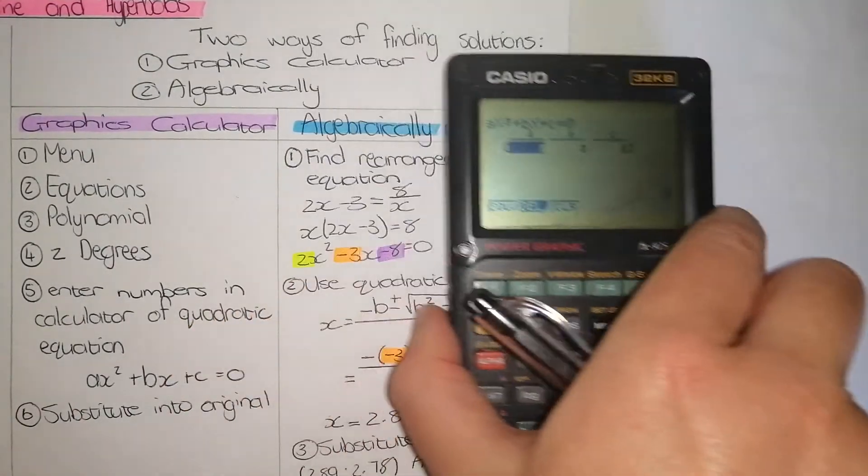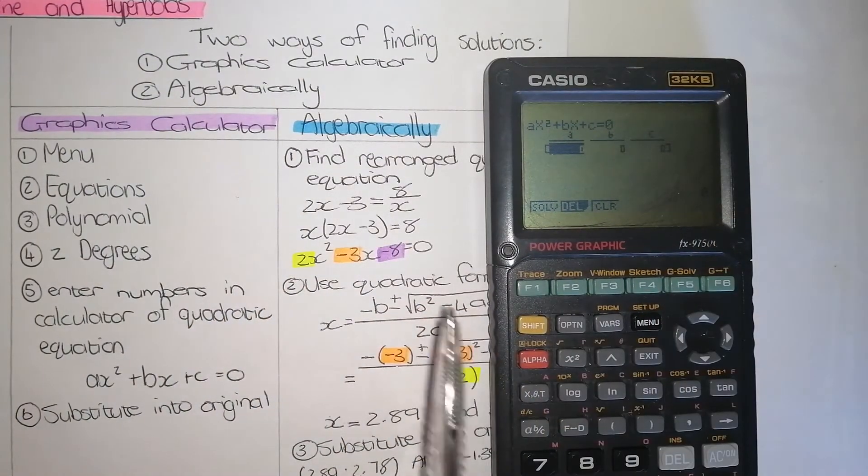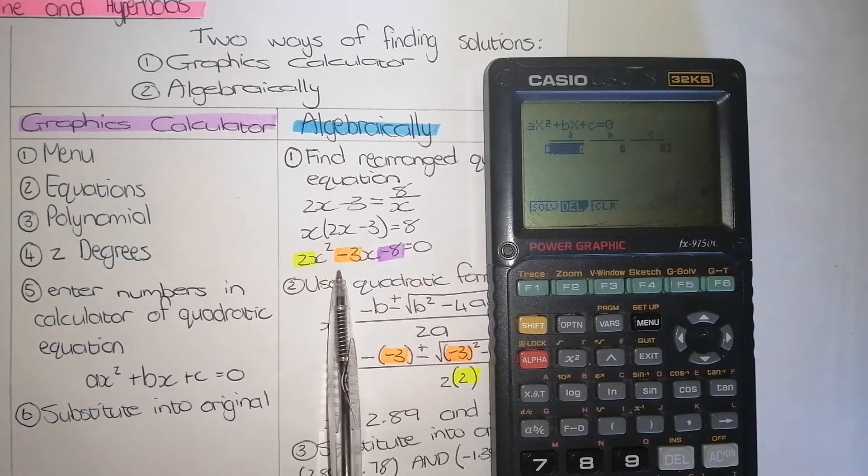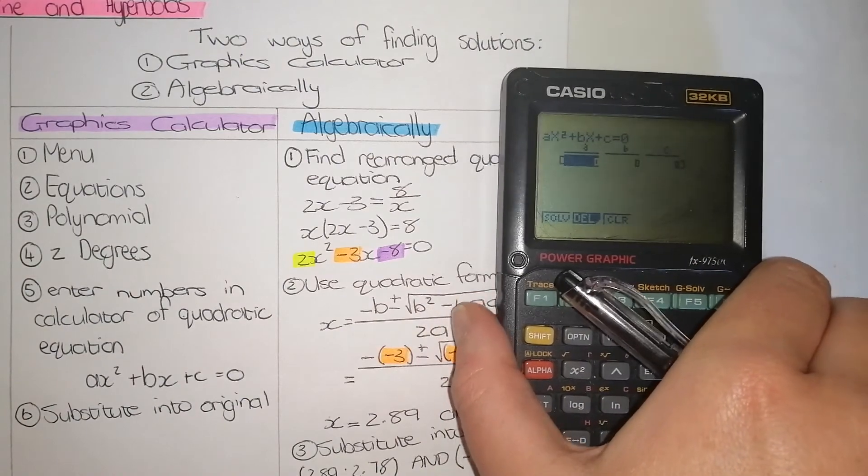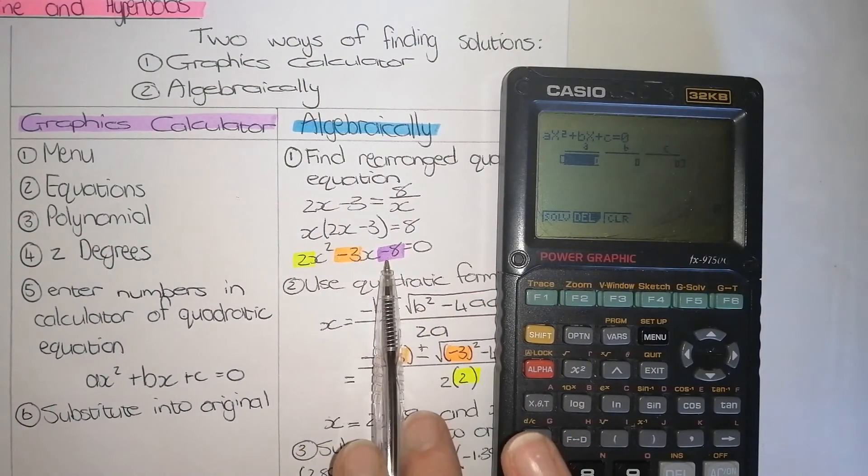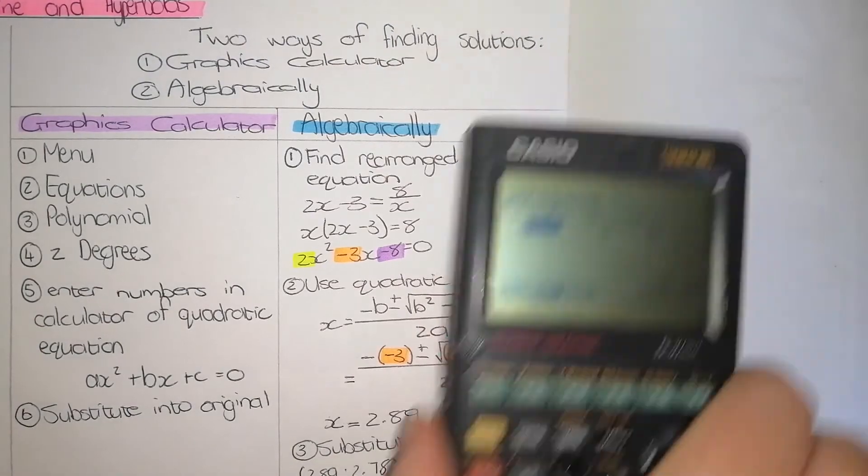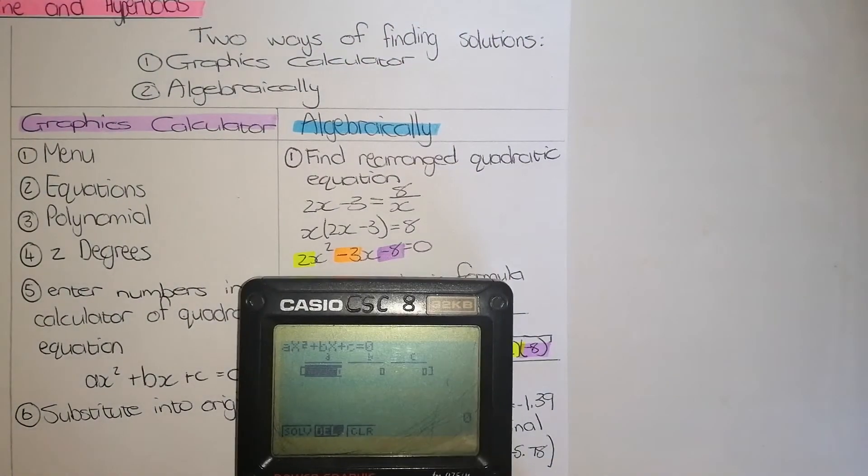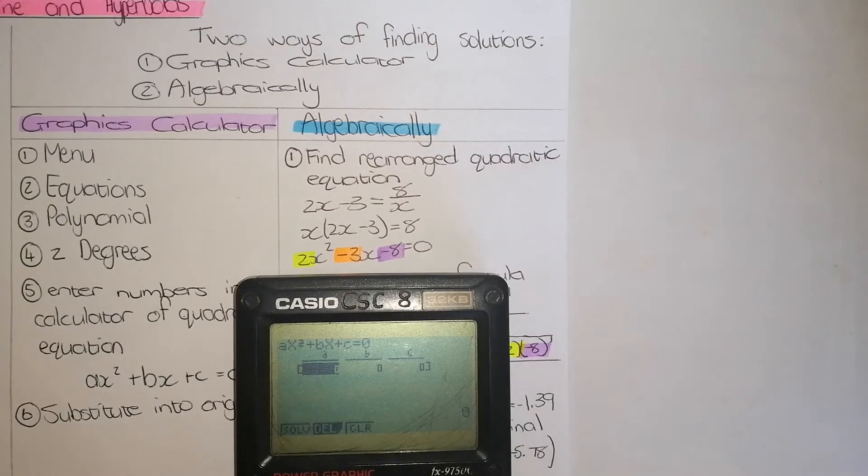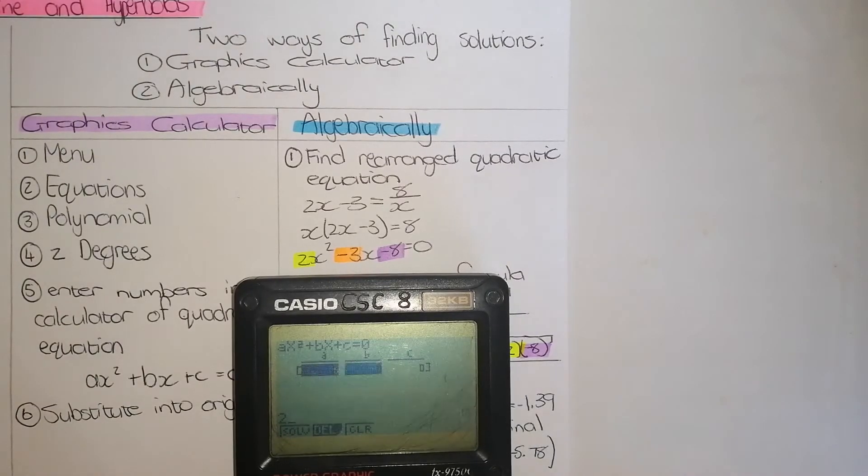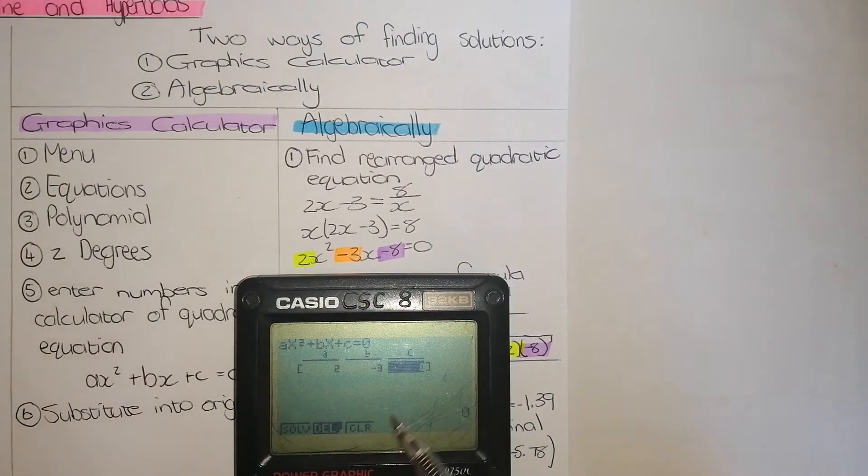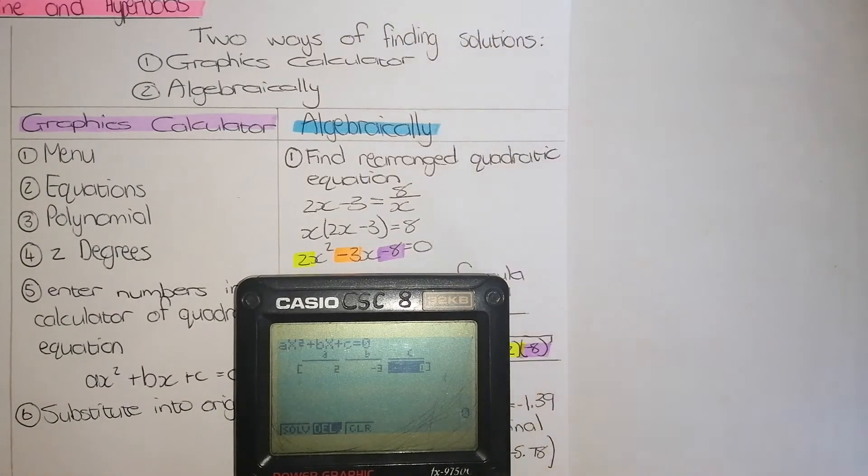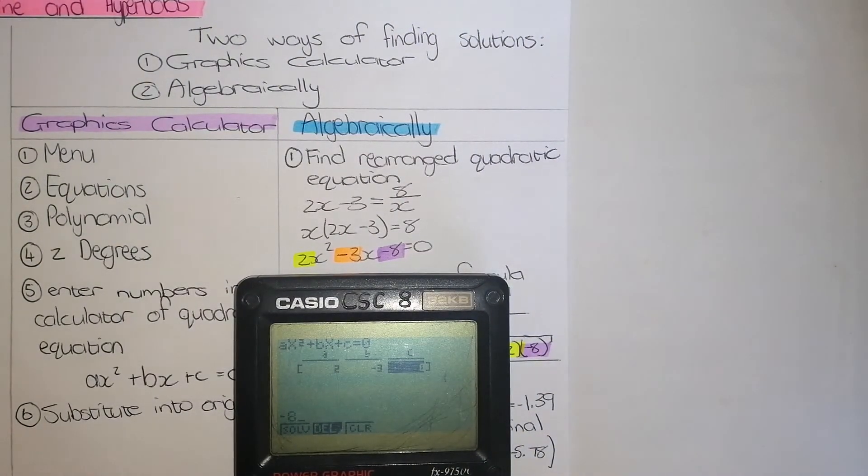If you look at the algebraic equation that we have found, it is in the same format. ax squared plus bx plus c is equal to 0. So what I need to do now is type this 2, negative 3 and negative 8 into the right four places. So I'm going to start with A, which is 2. Enter. Then the highlighted bit goes to B. Negative 3. Enter. Then the highlight bit goes to C, which in this case is negative 8. Enter.